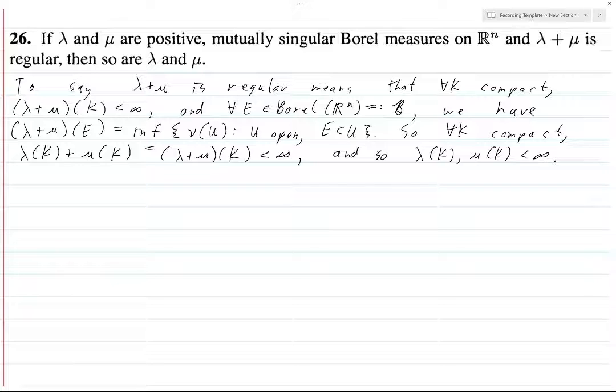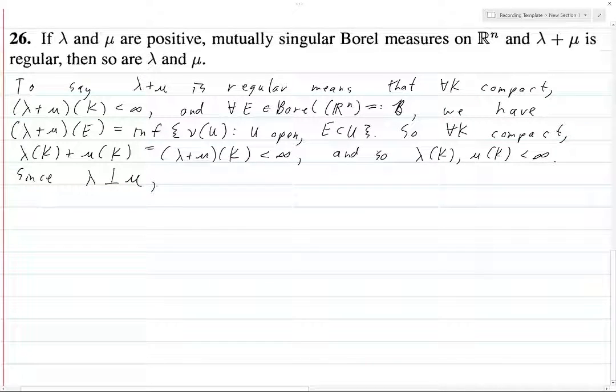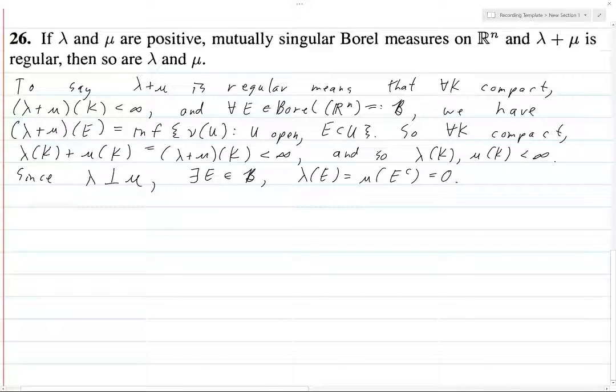To deal with inner regularity, this actually turns out to be kind of neat. Since we haven't used the mutual singularities yet, so let's say since this is this, there exists an E in script B such that λ(E) is equal to μ(E complement) is equal to 0. So μ lives on E and λ lives on E complement.